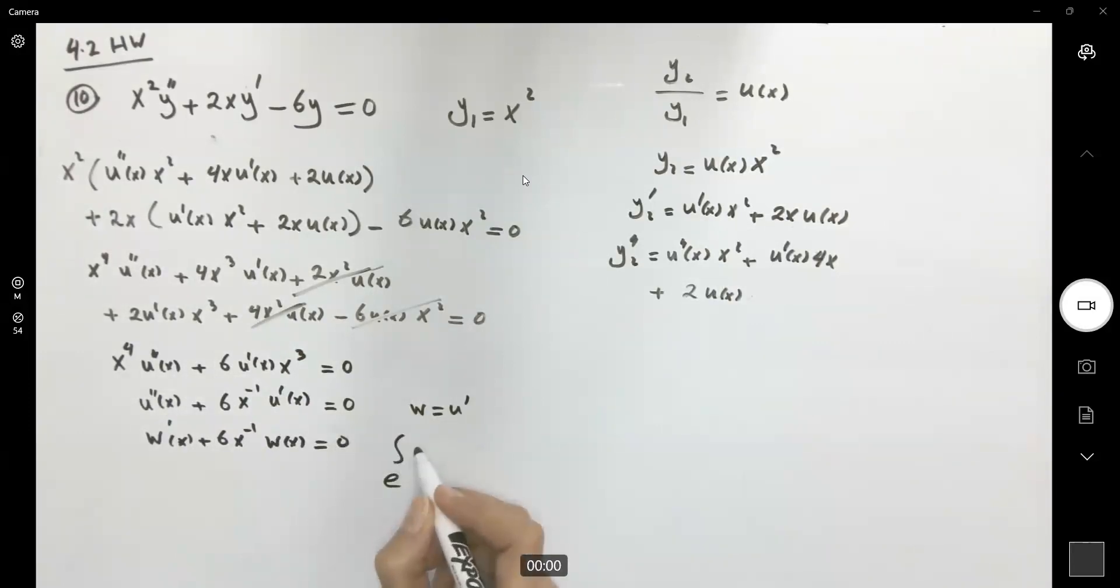The integrating factor is e to the integral 6 divided by x dx. Which is e to the sixth ln absolute value of x. And then we multiply all terms that we have by the integrating factor. We get w prime times x to the sixth plus 6 divided by x times x to the sixth, w equal to zero.